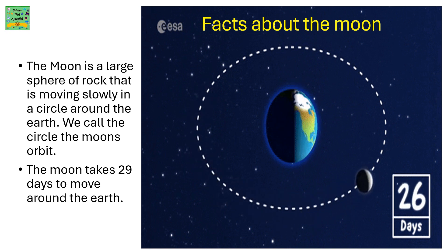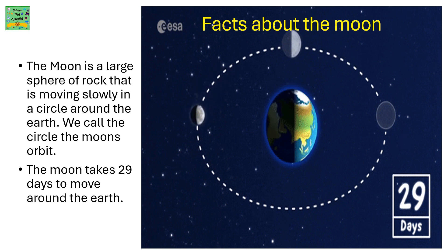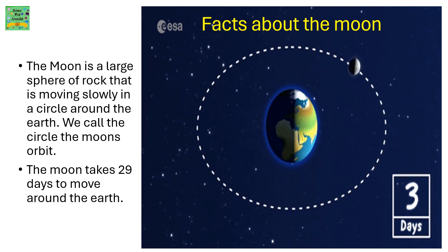The moon is a large sphere of rock that is moving slowly in a circle around the Earth. We call the circle the moon's orbit. The moon takes 29 days to move around the Earth.